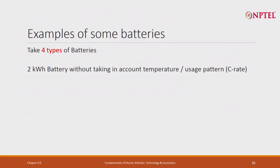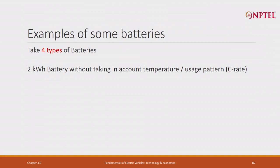Let me give some examples. I will take 4 types of batteries — a 2 kilowatt hour battery — and I will not take into account temperature and usage pattern. I will assume whatever is given by the manufacturer, that it is giving 1200 cycles, because otherwise it will vary with temperature and usage pattern. But this gives you a kind of ballpark figure.